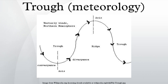If a trough forms in the mid-latitudes, a temperature difference between two sides of the trough usually exists in the form of a weather front. A weather front is usually less convective than a trough in the tropics or subtropics. Sometimes collapsed frontal systems will degenerate into troughs.